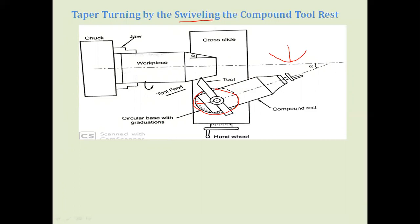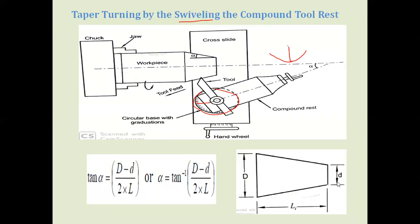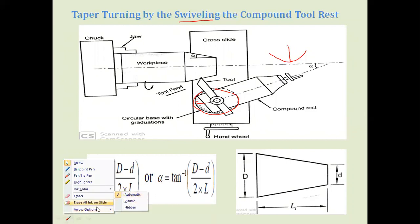In the swiveling compound rest method, the compound rest supporting the tool is swiveled to the desired angle alpha, and then the cutting tool is moved over the surface to develop the required tapered surface. To find the angle alpha, the formula used is: tan(alpha) = (D - d) / 2L, where D is the larger diameter of the conical surface, d is the smaller diameter, and L is the length over which the taper is to be developed. This calculated alpha is then set on the circular scale.